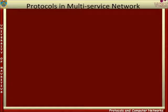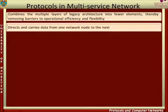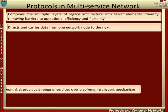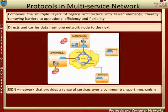Multi-Service Network Architecture combines the multiple layers of legacy architecture into fewer network elements, thereby removing barriers to operational efficiency and flexibility. It directs and carries data from one network node to the next. An ISDN is an example of a multi-service network, which can be loosely defined as a network that provides a range of services over a common transport mechanism, that is, a common means of transferring data between devices.